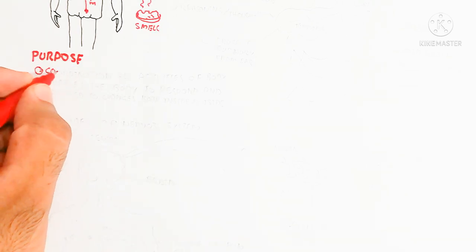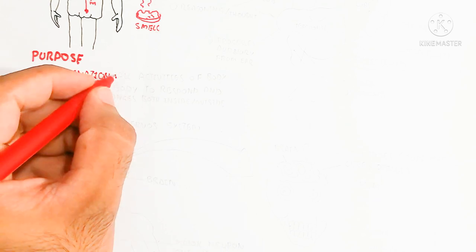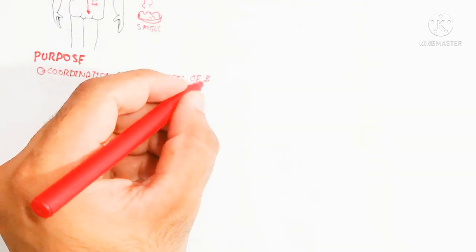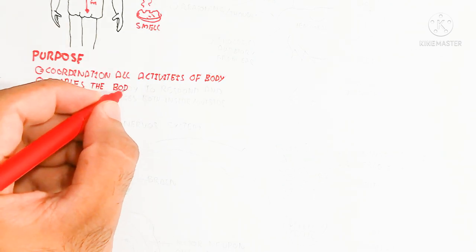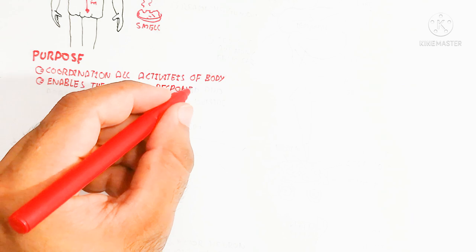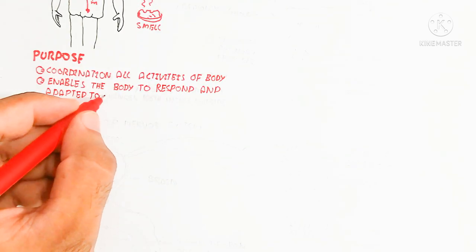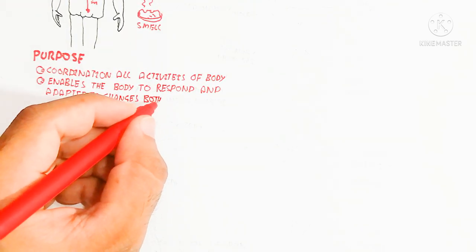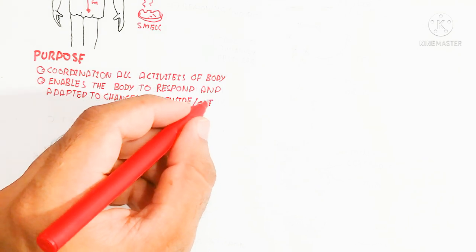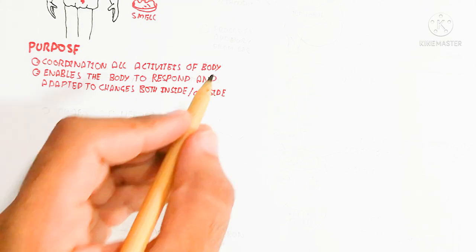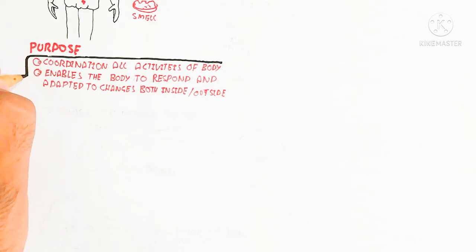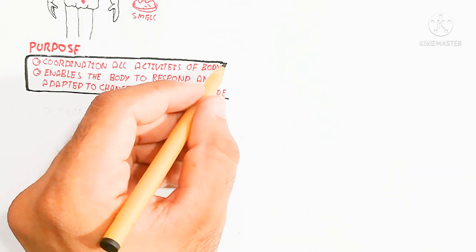The purpose of the nervous system is the coordination of all activities of the body and to enable the body to respond and adapt to changes both inside and outside. For example, if the outside temperature is high, our body will maintain the internal temperature at 37 degrees Celsius by the hypothalamus, through negative and positive feedback, which is maintained and known as homeostasis.